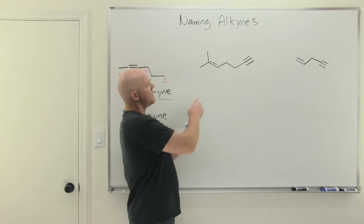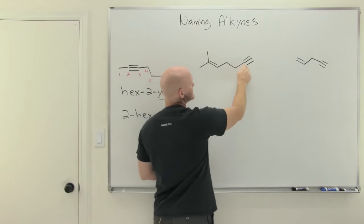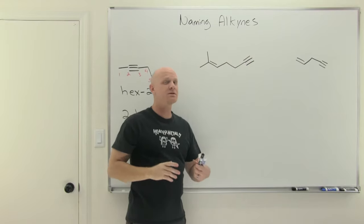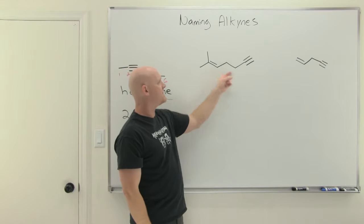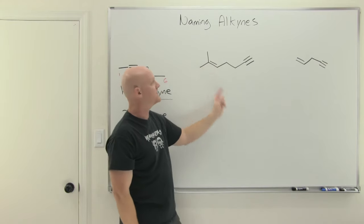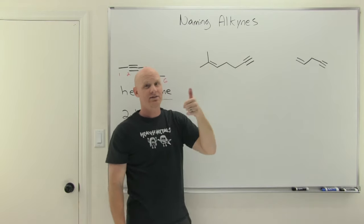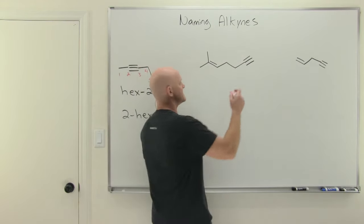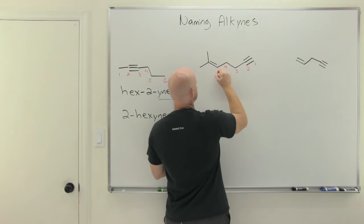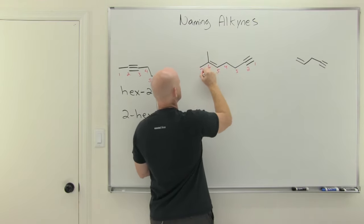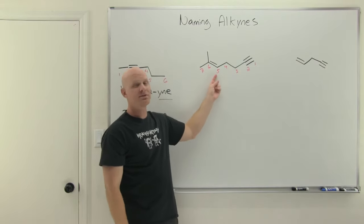In this case, the longest chain containing both the alkene and alkyne is seven carbons, so this will be some form of hept-enyne. If I number left to right, the alkene is at carbon two. Starting from the right side, the alkene is at carbon one, which is lower numerically and gets preference. Whichever one can get a lower number gets the priority.